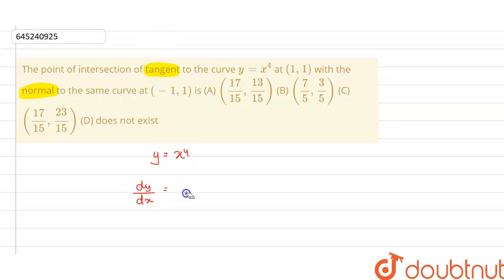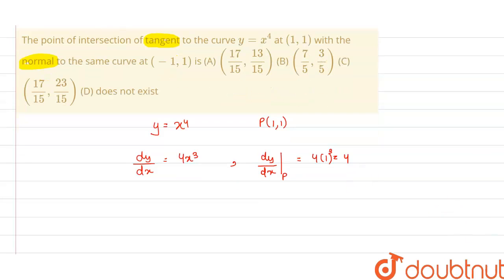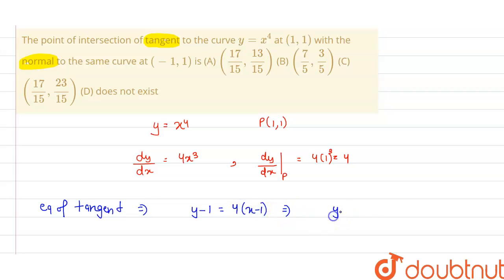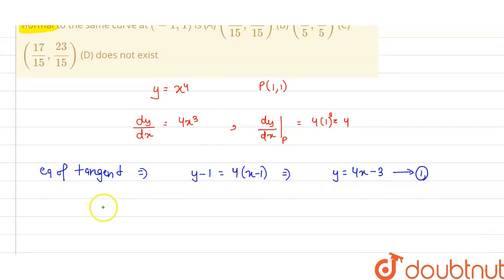dy/dx = 4x³. Now dy/dx at point P, where point P is (1, 1), this will be 4 × 1³ = 4. So the equation of the tangent will be y − 1 = 4(x − 1), which gives y = 4x − 3. This is the equation of the tangent.